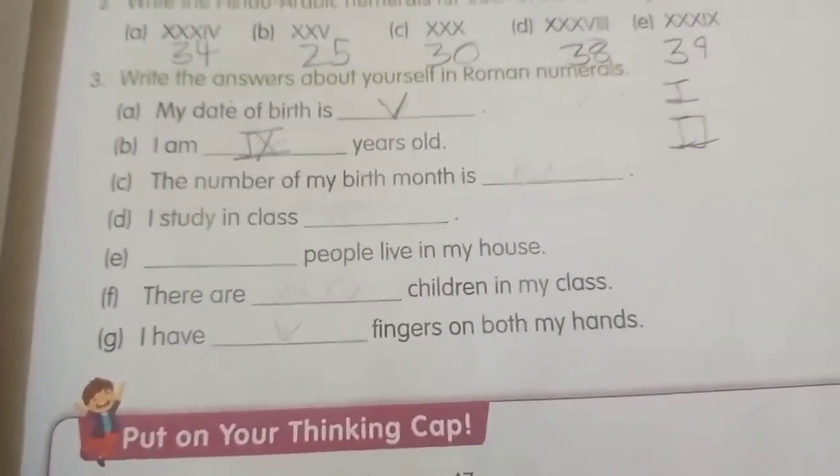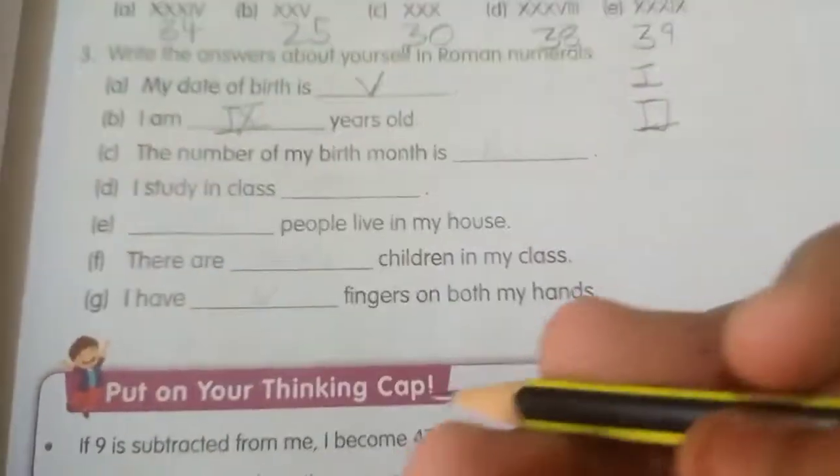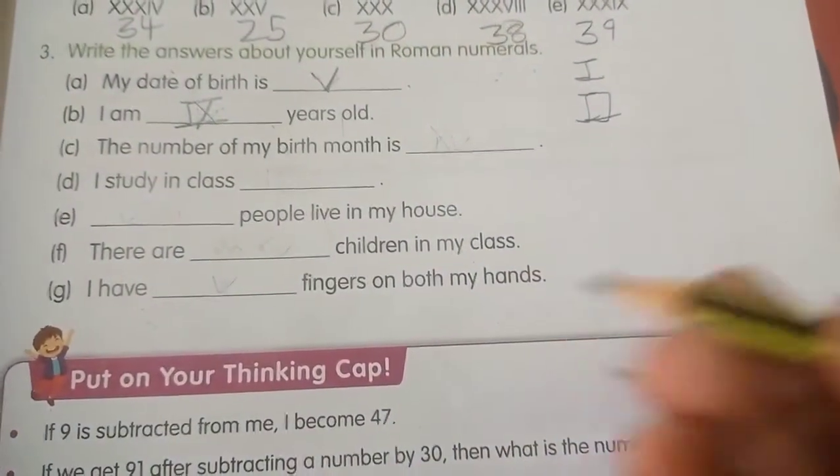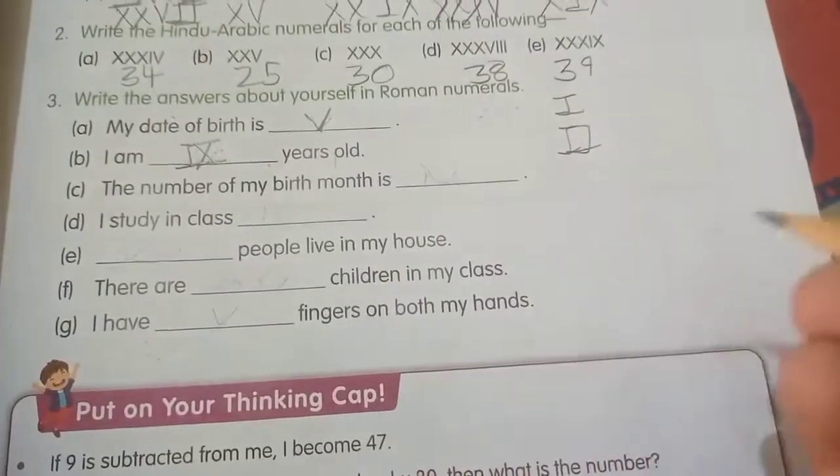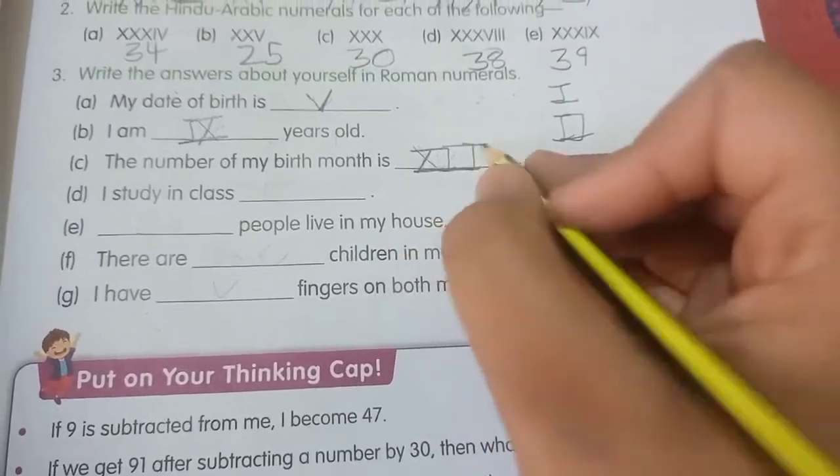Next is the number of my birth month. If your birth month is 1, 2, 3, 4, like January 1st or February 2nd, my month is 12th, so I will write XII.